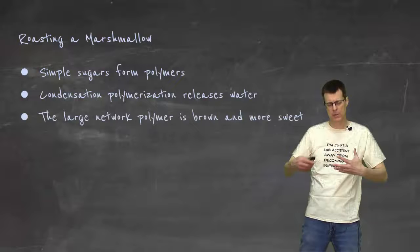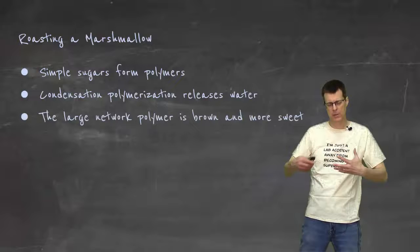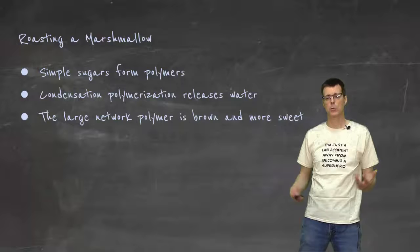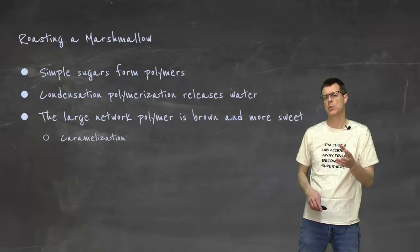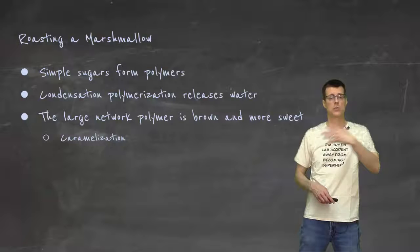Not only that, but that large network of sugar molecules now, or that large polymer of sugar monomers, that is now, the way it interacts with the light is brown. It's also going to be a little bit more sweet. And we call that process of cooking sugar like that, and going from simple sugars to a more complicated mixture to a polymer, we call that caramelization. There's lots of examples where that happens.